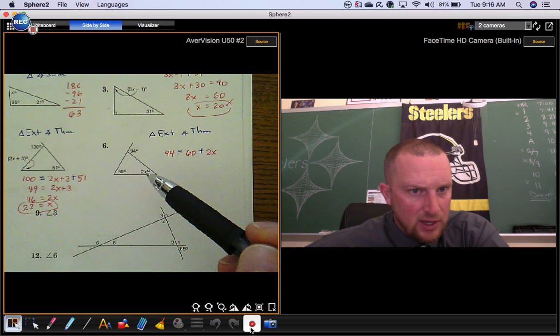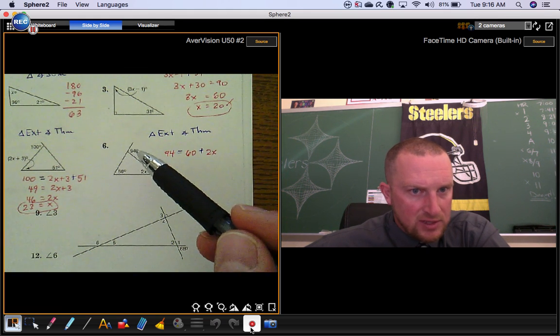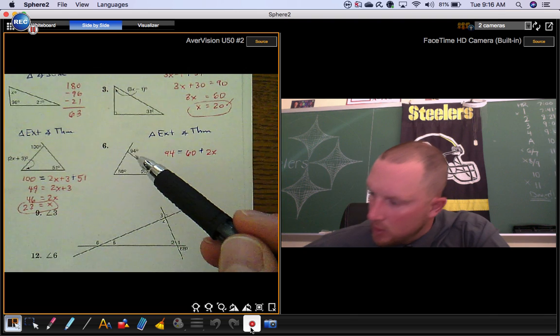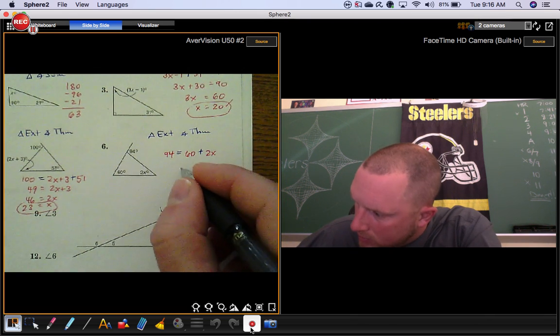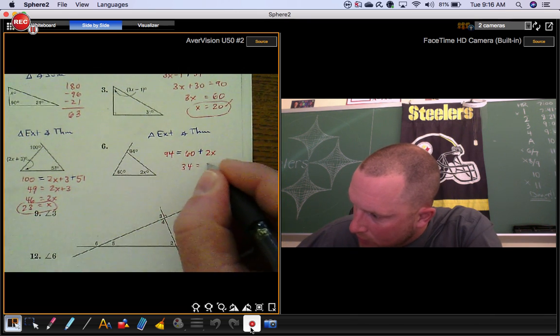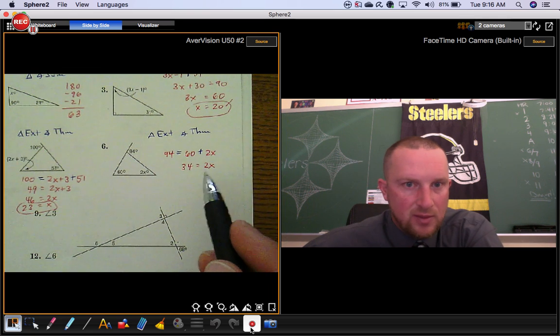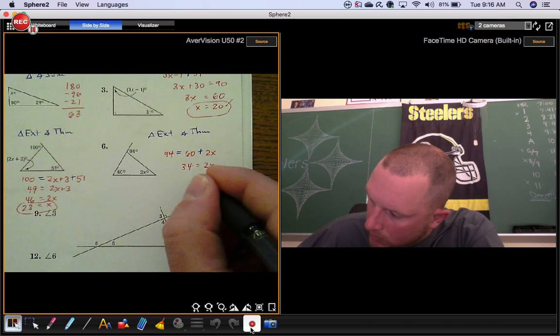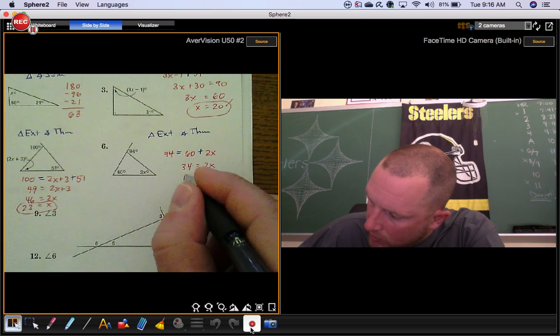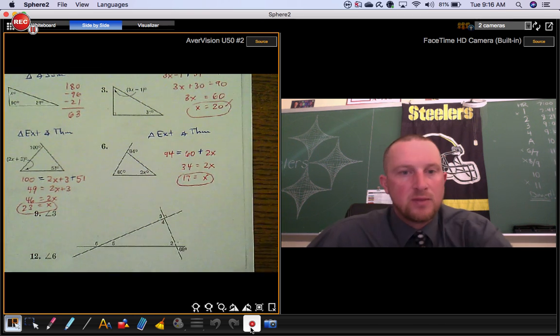Number 6, we got a variable again. These two together must add up to 94. So if that's 60, you know you got 34 degrees. That's got to be the same thing as 2 times the number. You could write this equation too. Just divide by 2, x will be 17.